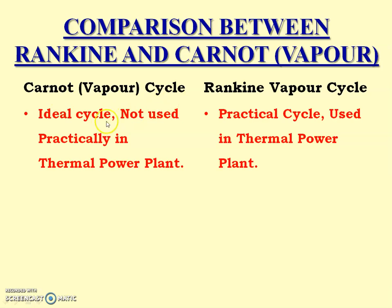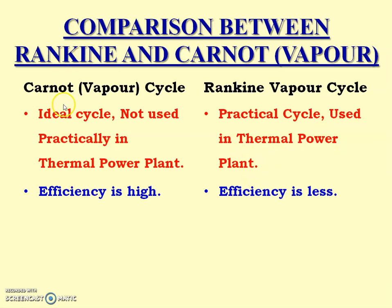Carnot vapor cycle is the ideal cycle and it cannot be utilized practically in a thermal power plant. While Rankine vapor cycle is a practical cycle, and this cycle is used in thermal power plants. In terms of efficiency, Carnot vapor cycle has higher efficiency, while Rankine vapor cycle has relatively less efficiency.